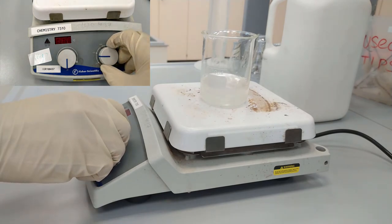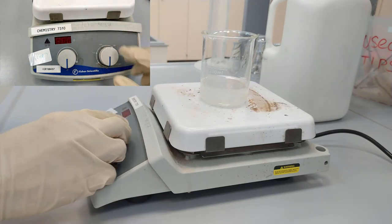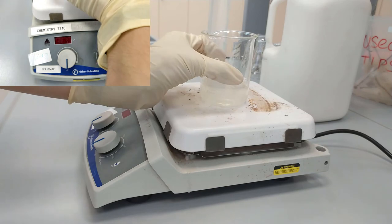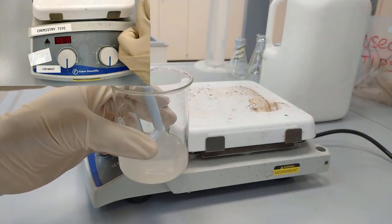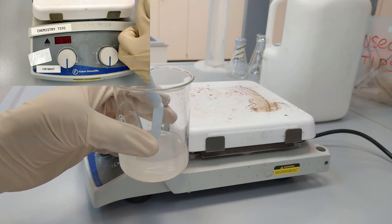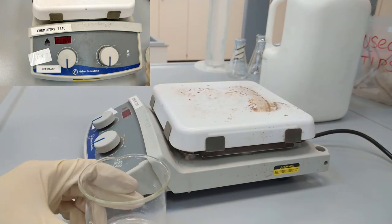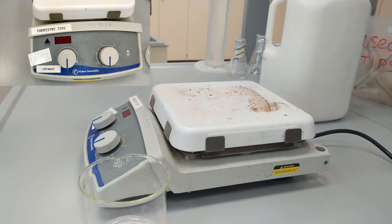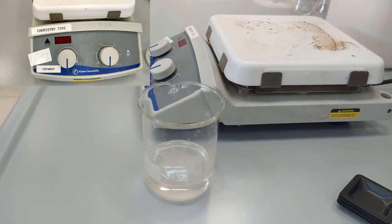So now we turn off the stirrer and you really see that it is transparent and homogeneous. Using a special magnet we are taking the magnet bin out. The next step would be adding another 50 milliliters to bring the volume to 100 milliliters.